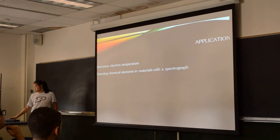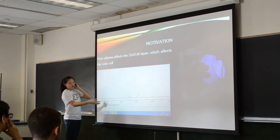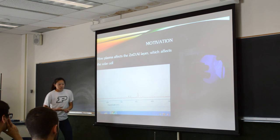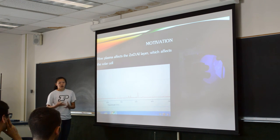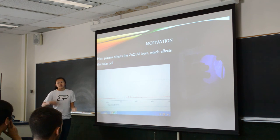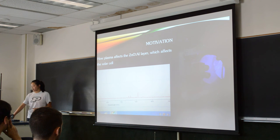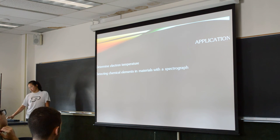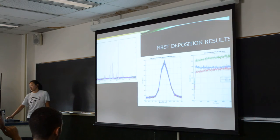It produces a chart of wavelength versus intensity, like a picture on my computer screen. From this we can determine characteristics and properties of the plasma, and by analyzing the plasma we can figure out properties of the layer itself, and from there we can determine how efficient the cell will be. Other applications of OES include determining electron temperature and other chemical elements, but we're not focusing on that right now.